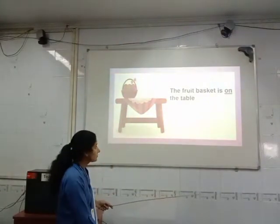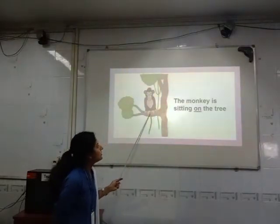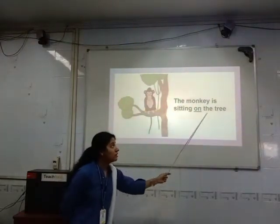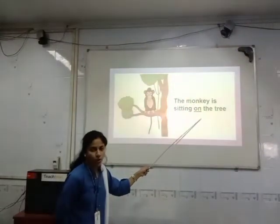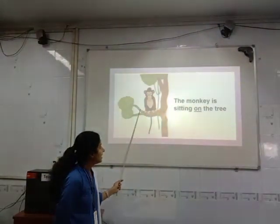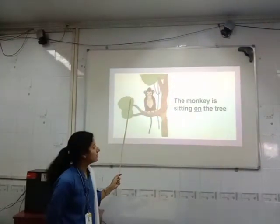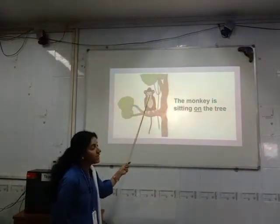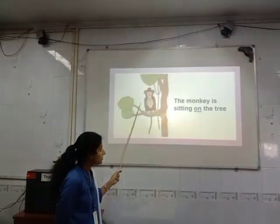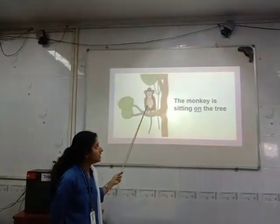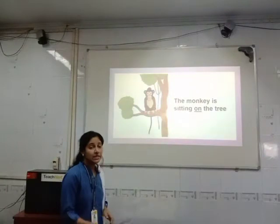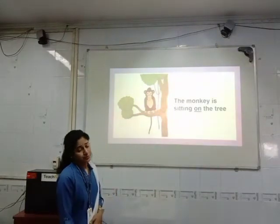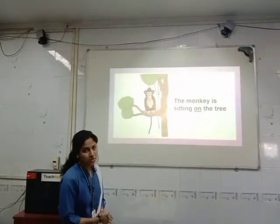Understood? Now see this picture. There is a tree and there is a monkey. The monkey is sitting on the tree. So the word 'on' shows us exactly the position of this monkey. Where is the monkey sitting? The monkey is sitting on the tree. So we have learnt: in, on, under and near. These four words help us to tell the exact position of things and people.